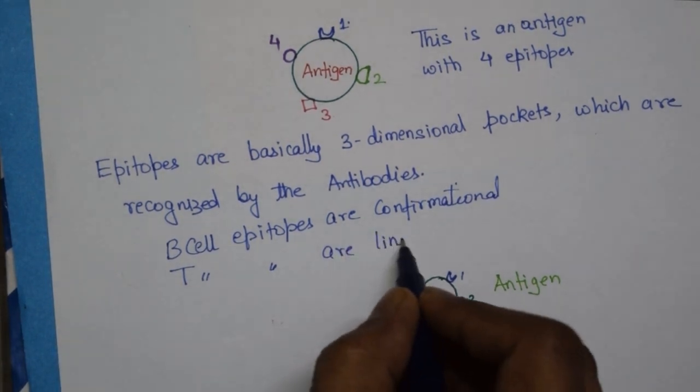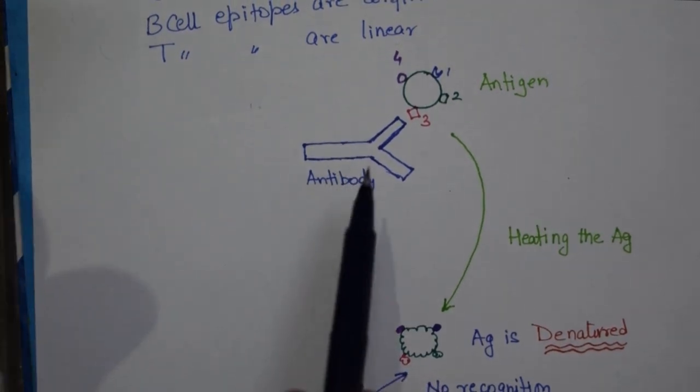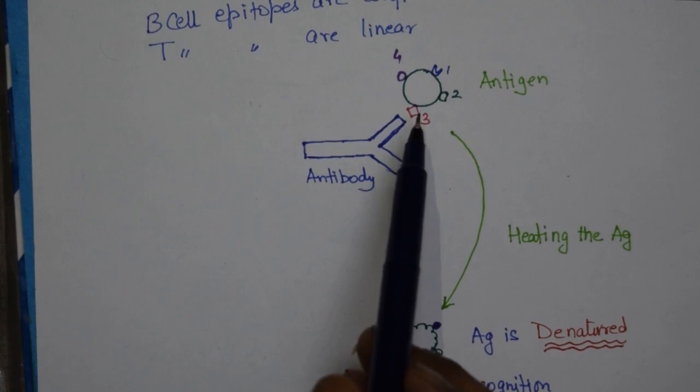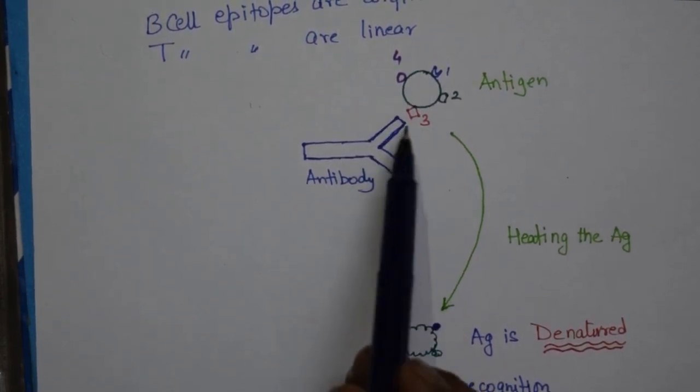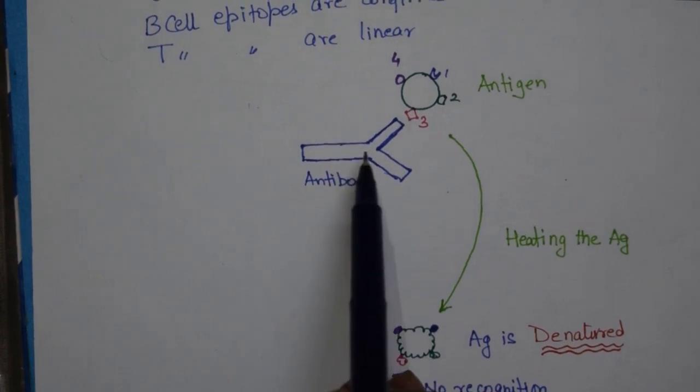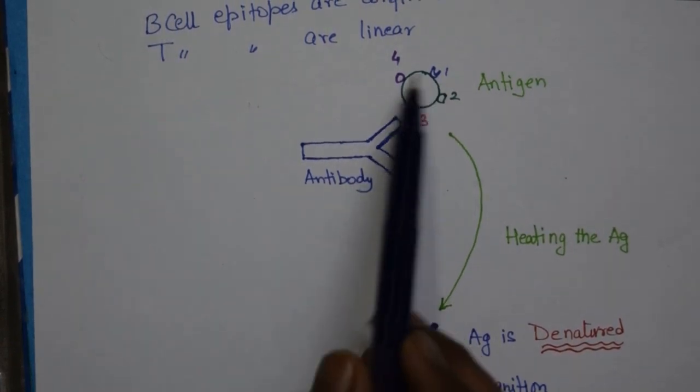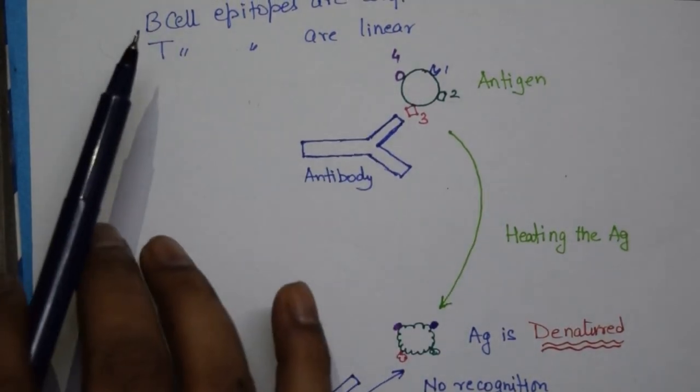So this is a very big difference. Now here what I have shown is interaction of an antibody with an epitope and what you can see is antibody does not recognize the antigen. What it recognizes is basically an epitope. So antibodies are always specific to an epitope. It will not recognize an antigen. It will only recognize a part of the antigen which is called the epitope.